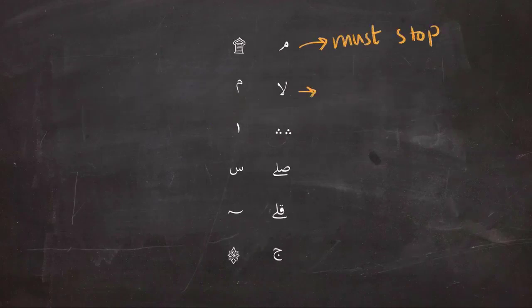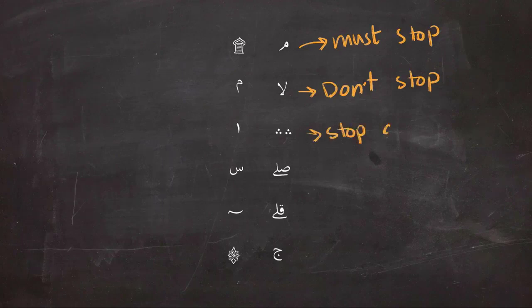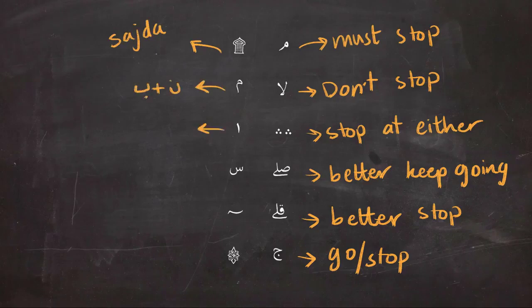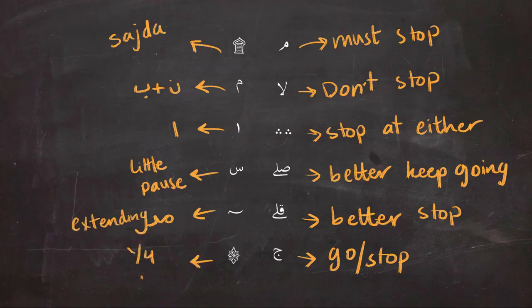So these were the 12 signs that you are going to see in the Quran. Here I'm going to give a quick summary of what these signs mean. Try to remember them, and of course, the best way to learn them is by reading a lot of Quran, because practice makes perfect.